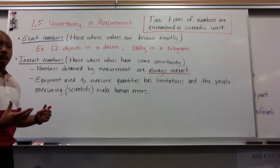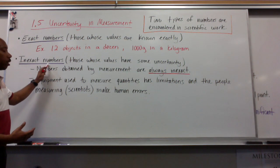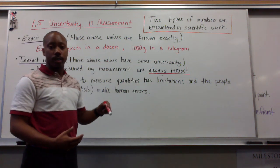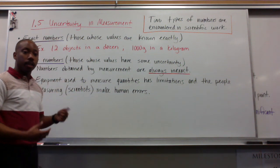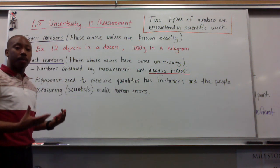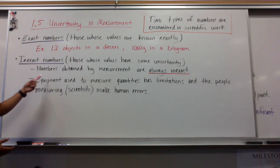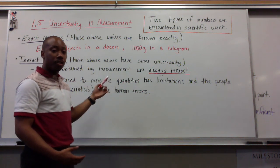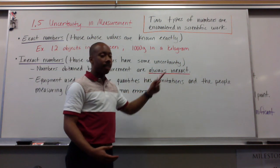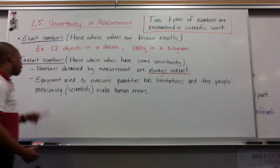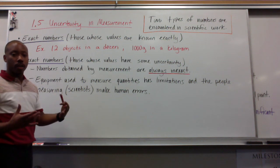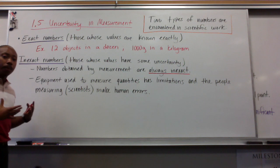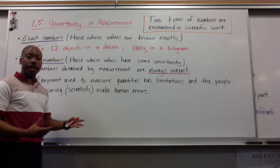The other type of numbers we'll encounter are inexact numbers, and these are numbers whose values are uncertain. These numbers have some uncertainty — these are the ones that we handled in the laboratory. They have uncertainty because they're obtained by measurement, and measurements are always inexact. They're inexact because the equipment we use to measure has its limitations, and we — the people measuring, the scientists — make human errors.